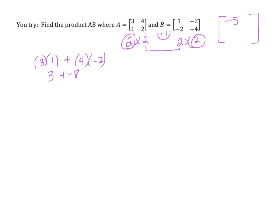Let's do top right. So 3 times negative 2, plus 4 times negative 4. Negative 6 minus 16, gives us negative 22.